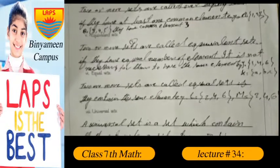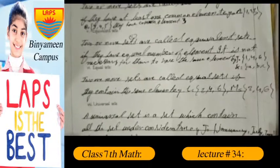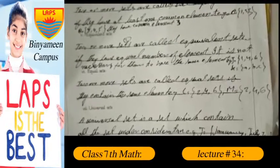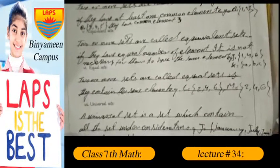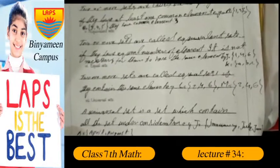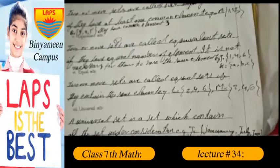Equivalent set: two or more sets are called equivalent sets if they have equal number of elements, and it is not necessary for them to have the same elements. For example, set J equals {1, 4, 6} and set K equals {A, B, C}. They have the same number of elements.